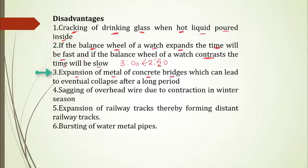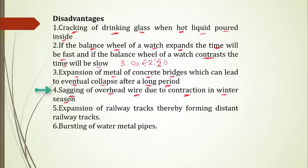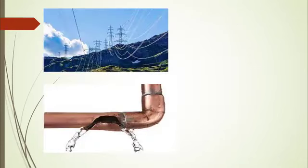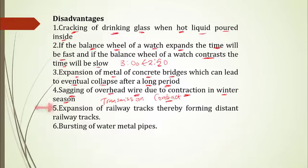We've also seen what happens in the expansion of concrete bridges, which can lead to rigidity and eventually collapse after a long period without maintenance. Another disadvantage is the sagging of overhead wires due to contraction in winter or cold seasons. In West Africa we experience the rainy season and harmattan — during these cold periods, overhead wires used for electricity transmission will contract, because solids contract when they cool. When this contraction happens the wires sag and take on a parabolic shape. We've also seen how railway tracks can spread apart as a result of expansion, resulting in the derailing of trains.